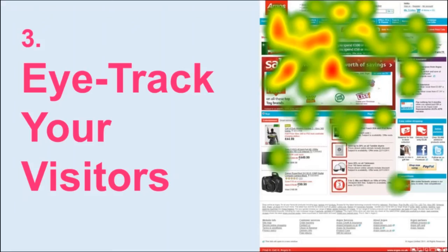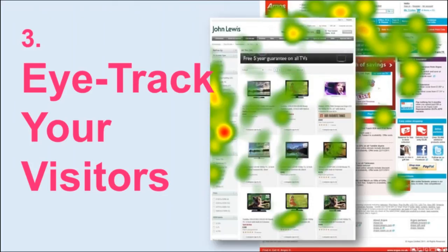Here's an example of a heat map on the Argos website — people tend to look at the top left and key sale items, but you can see the journey looks quite complicated. On the John Lewis website by contrast, the visit is much clearer, with the eye drawn to navigation down the side of the page and the keyword search box. Eye tracking can be so much better than just asking people, because people tend to post-rationalise. It's important to match the profile of your web users to who you are recruiting.